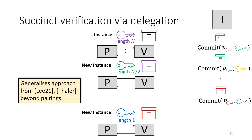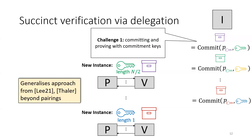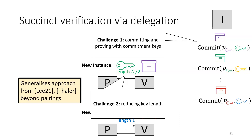This approach is directly drawn from prior works Li21 and TALA, these pairing-based protocols. What we need to explain to make this approach work is how to commit to commitment keys and prove statements about them — since they may be from a different domain than the original message — and how to reduce the key length from N to N/2 at each step.